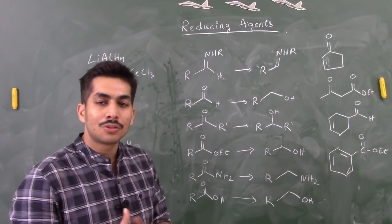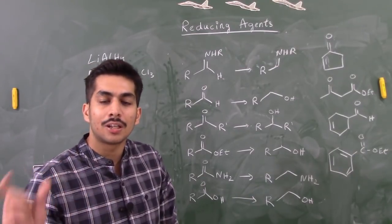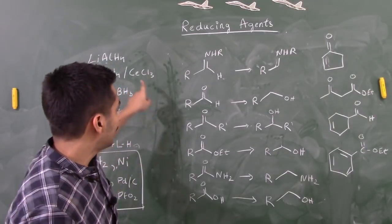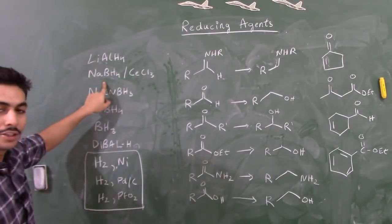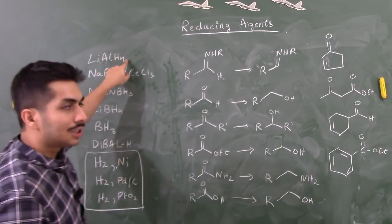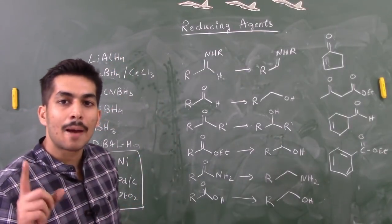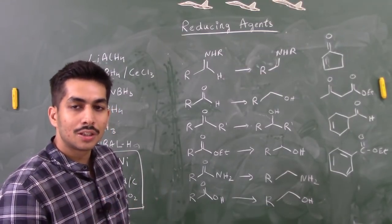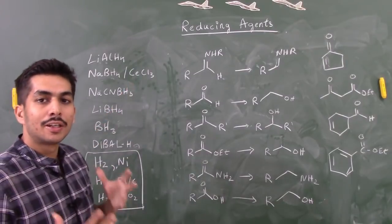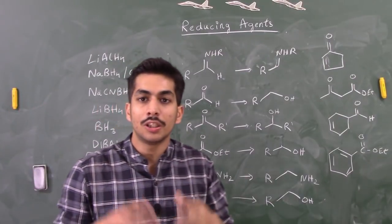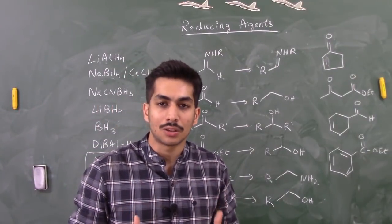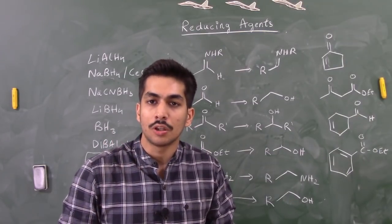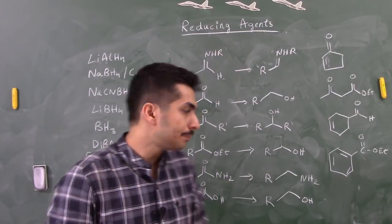In exam questions, when asked for the most appropriate reagent to convert an ester to an alcohol, if both LiAlH4 and NaBH4 are options, the correct answer is LiAlH4. Both can reduce esters, but LiAlH4 does it easily, whereas NaBH4 reduces very slowly with poor yield and high reaction time — making it an inappropriate choice.